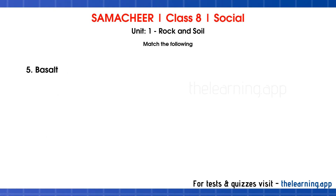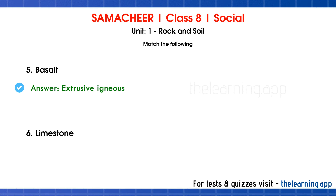Fifth question: Basalt. Correct answer is extrusive igneous. There are two types: extrusive and intrusive. When magma reaches the earth's surface and solidifies, that is extrusive igneous rock, for example basalt. Sixth question: Limestone. Correct answer is sedimentary rock.